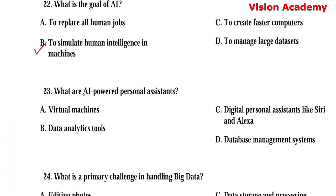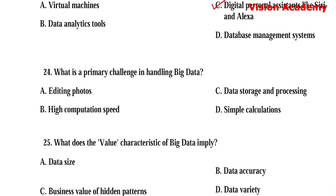Question number 23. What are AI powered personal assistants? Option A: Virtual machines. Option B: Data analytics tools. Option C: Digital personal assistants like Siri and Alexa. Option D: Database management systems. Here, option C, digital personal assistants like Siri and Alexa, is the right answer.